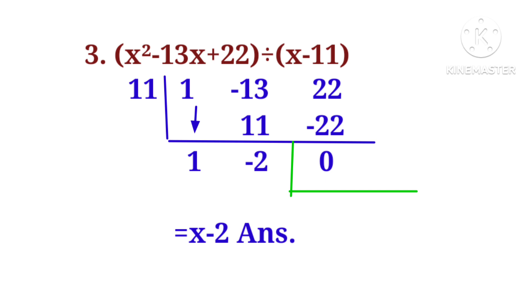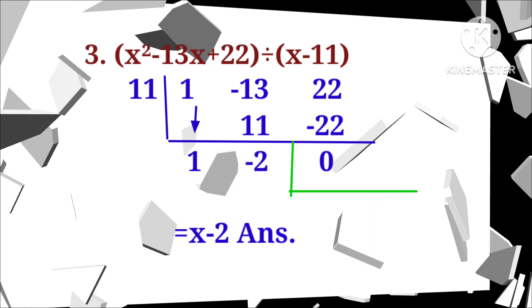Now, write down 1, and 11 times 1 is 11. Minus 13 plus 11 is equal to minus 2. Minus 2 times 11 is minus 22, and 22 plus minus 22 is 0. So, after adding, we get 1, minus 2, 0. 0 is remainder, so answer is x minus 2.